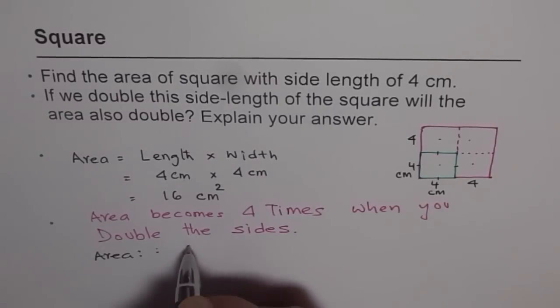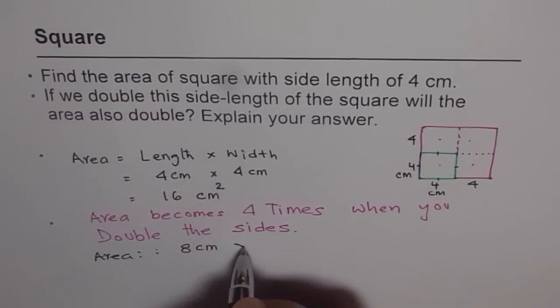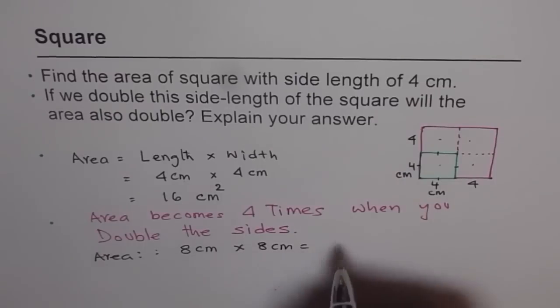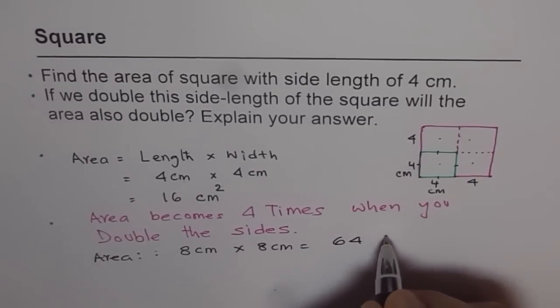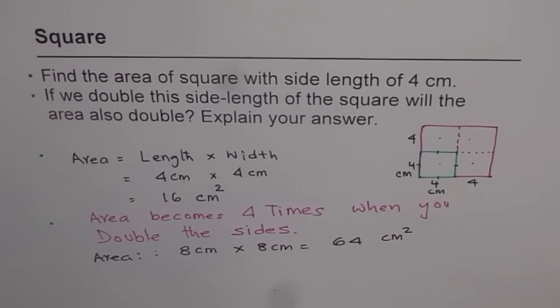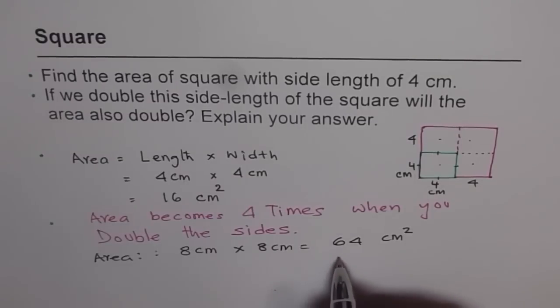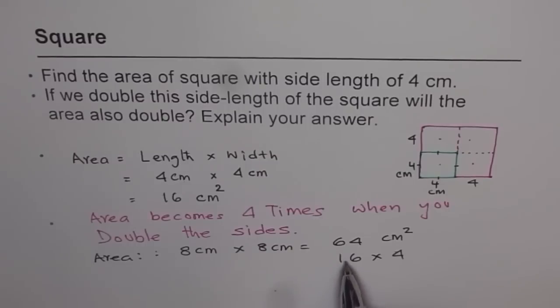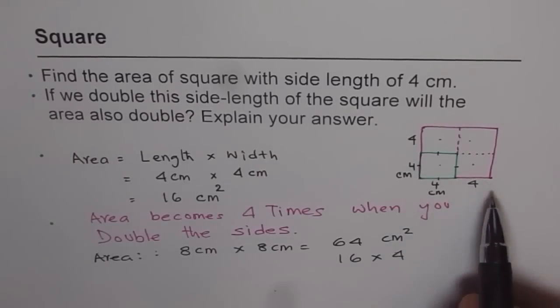8 cm by 8 cm, which is 8 times 8 equals 64 cm squared. Do you see that? You will find 64 is how much? 64 is actually 16 times 4. So our area becomes 4 times when we double the sides.